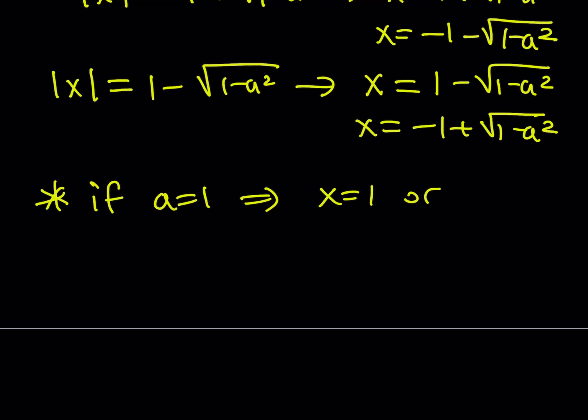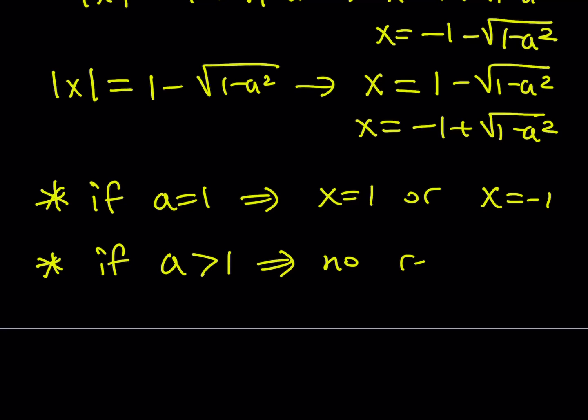If a is greater than 1, the expression inside the radical, 1 - a², becomes negative, so its square root is undefined. Therefore, there are no real solutions when a > 1.